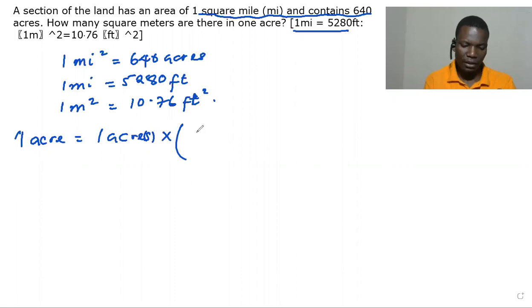We have one square mile being equal to 640 acres. Okay, and then because we know that this and that will go, we also multiply by another conversion factor.